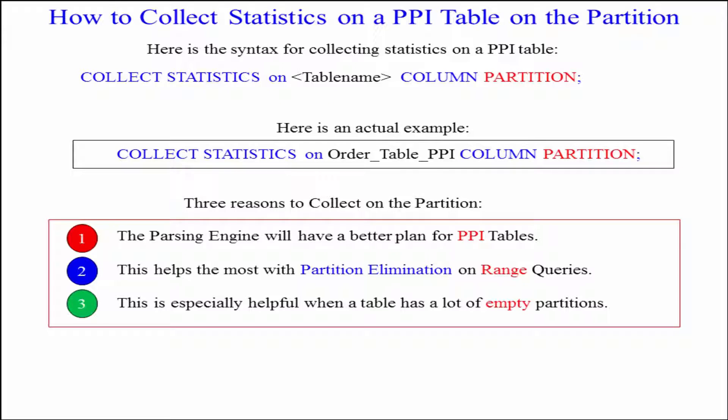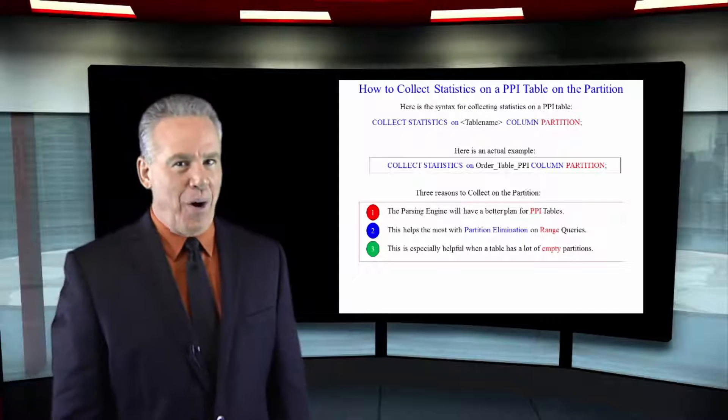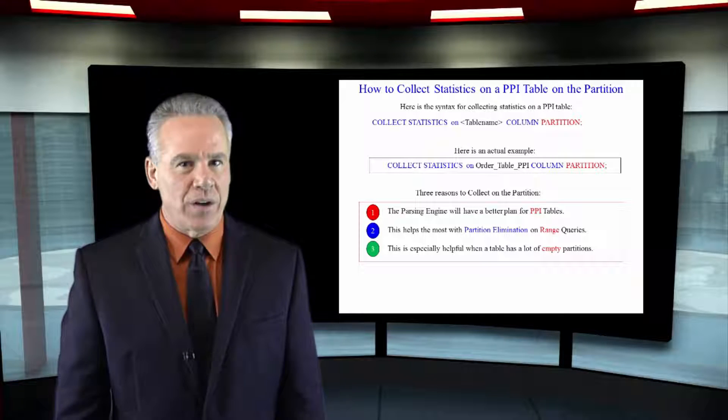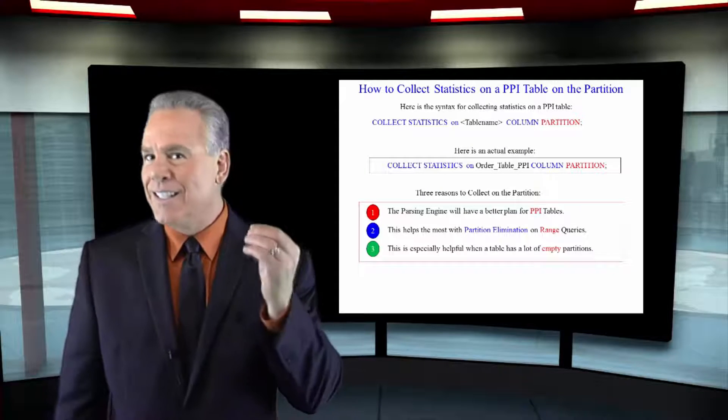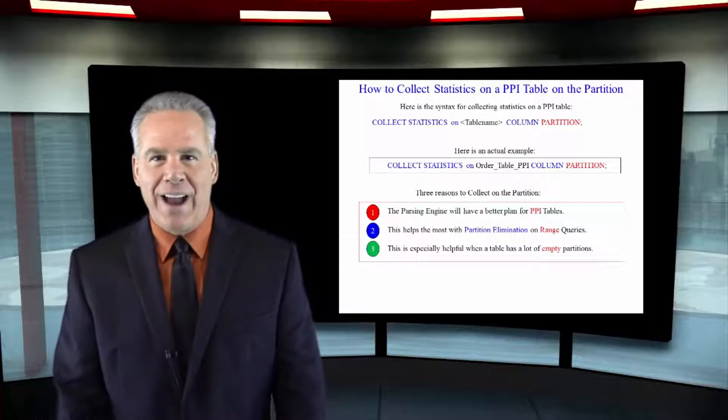I want something between this date and this date. And it's going to have a better idea of what is in those particular partitions within that range. And here's what I want you to understand. That's even more insightful when there's a lot of empty partitions. So use the keyword partition when you collect statistics on all tables, but especially PPI tables.